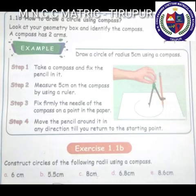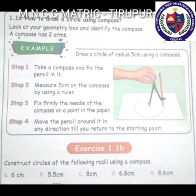Next, 1.1b: How to draw a circle using a compass. Look at your geometry box and identify the compass — a compass has two arms. To draw a circle of radius 5 cm: Step 1: take a compass and fix the pencil in it. Step 2: measure 5 cm on the compass using a ruler. Step 3: fix firmly the needle of the compass on a point on the paper. Step 4: move the pencil around it in any direction until you return to the starting point.